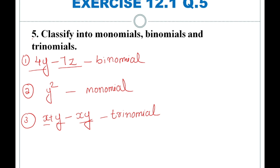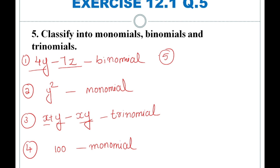The fourth expression is also called a trinomial. An expression with only one term is called a monomial. The fifth expression is ab minus a minus b. This has 3 terms — 1, 2, 3 — so this is a trinomial. An expression which contains three terms is called a trinomial.